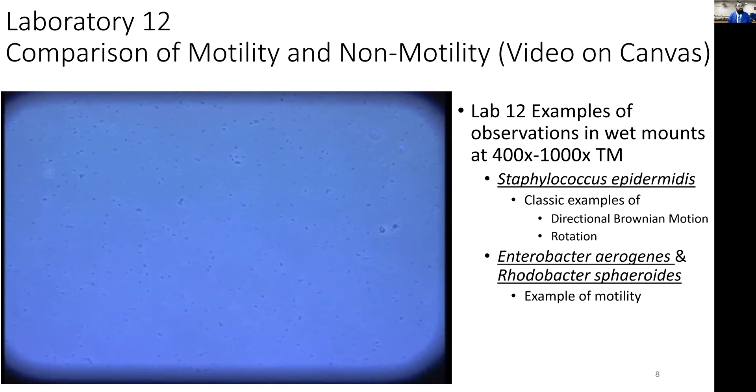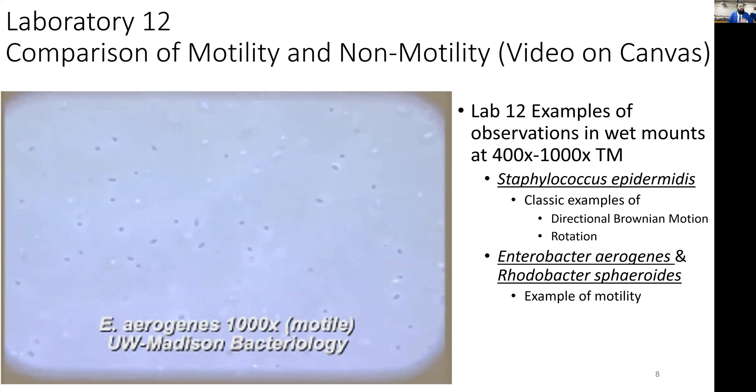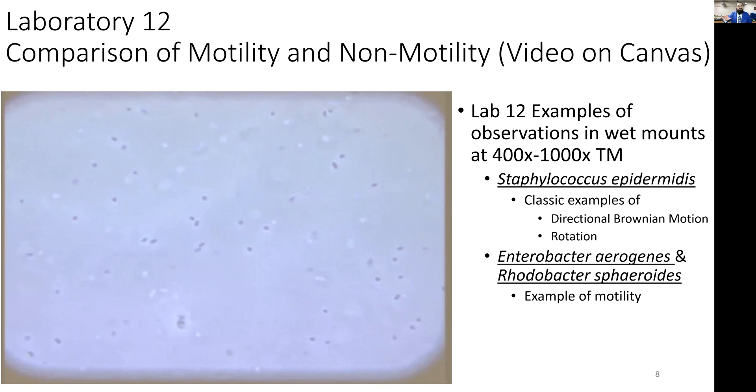Now here's a different organism—Enterobacter aerogenes. Even though you observe a little Brownian motion, you can see the organisms are truly moving around within their own area. They bounce around and go back and forth, not all being carried in one specific direction. If you zoom in, you see them traveling, changing directions as we go. A video of this from YouTube is available on Canvas as a reference.